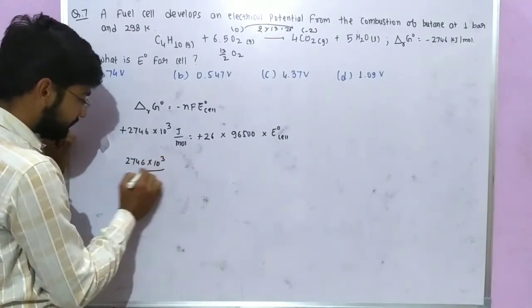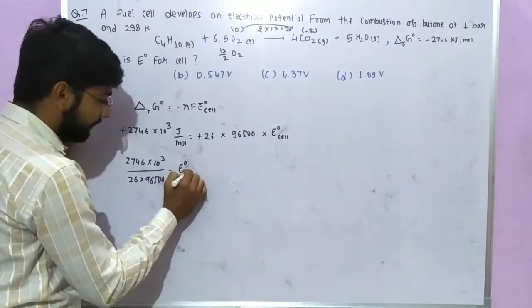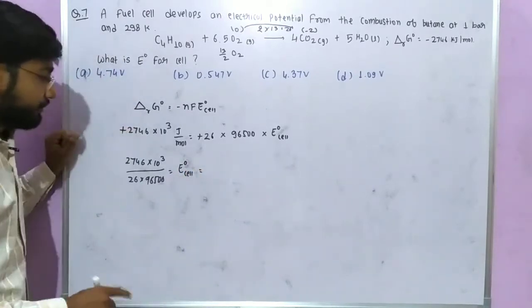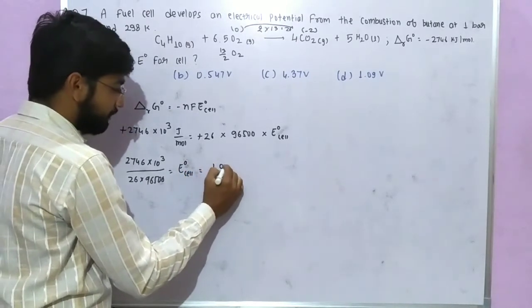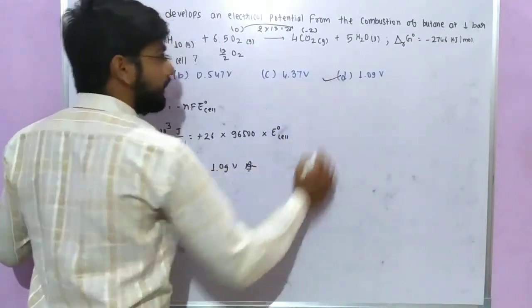So the value I will get is 1.09 volts. So here is your answer and option D is the correct option.